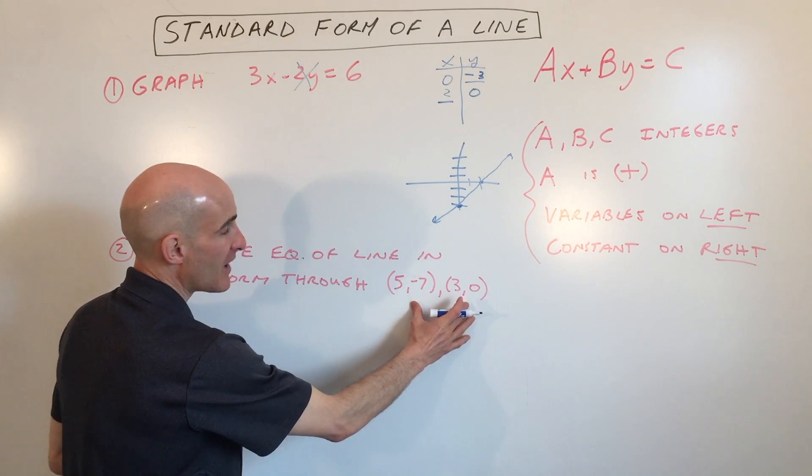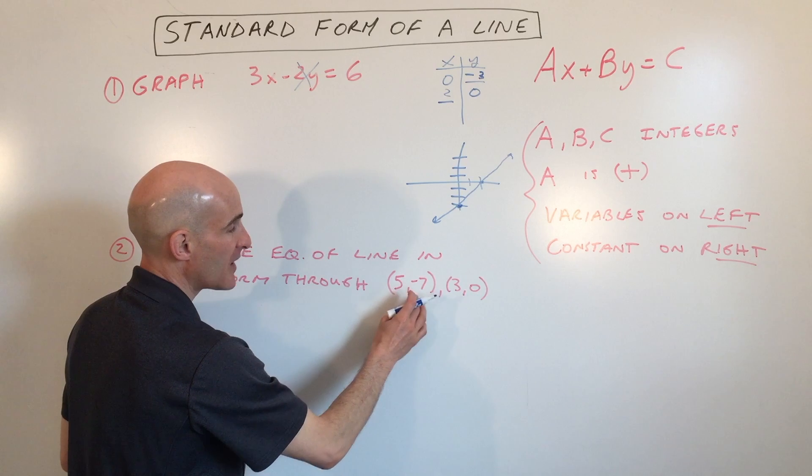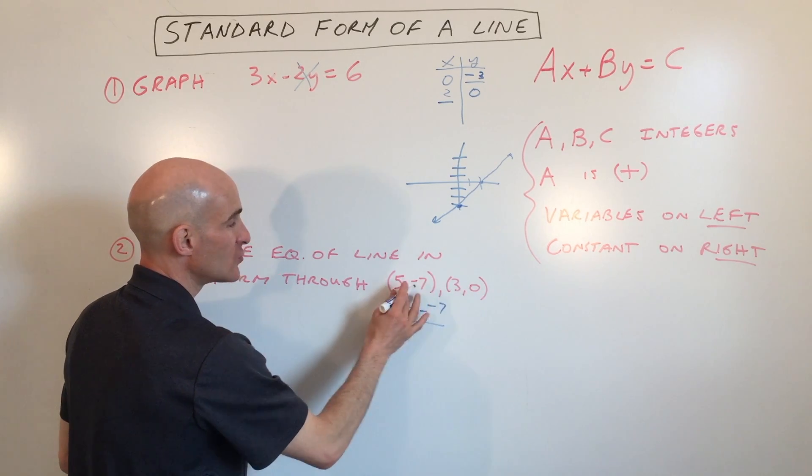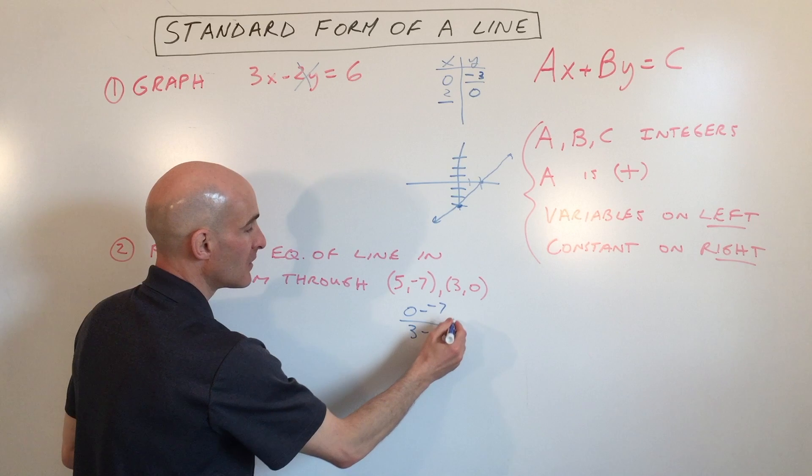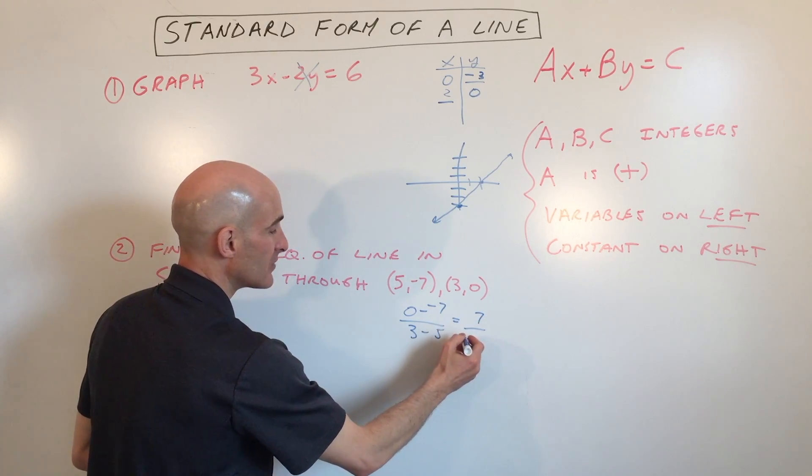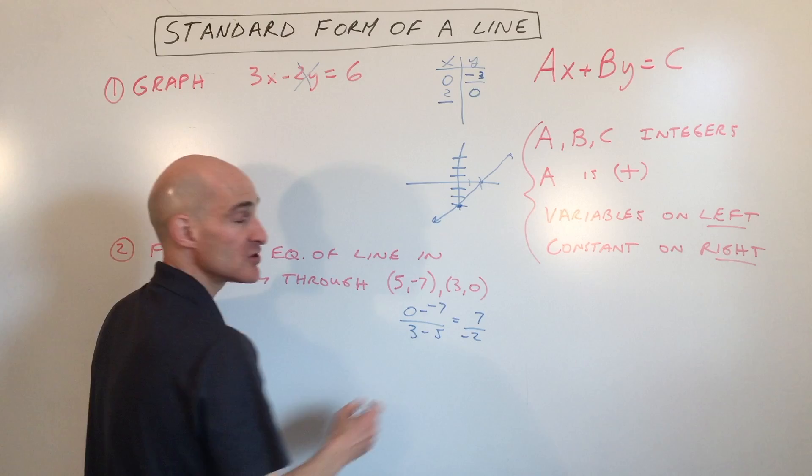First thing we're going to do is find the slope. So we're going to do y2 minus y1 over x2 minus x1. So that gives us positive 7 over negative 2.